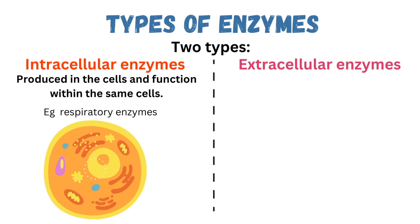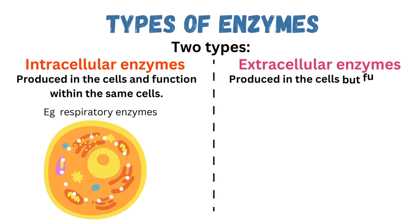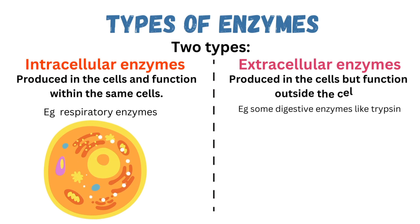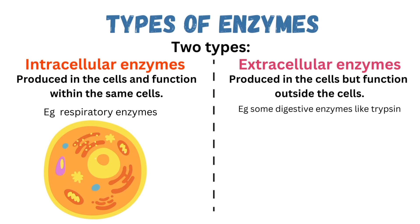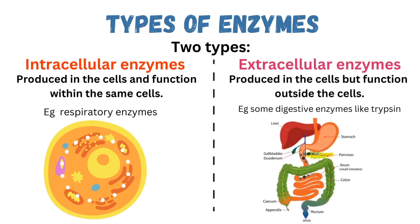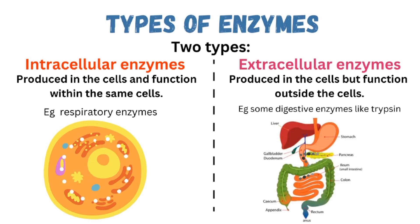Extracellular enzymes, on the other hand, are produced in the cells but function outside the cells that produce them. An example is trypsin, a digestive enzyme produced in the pancreas but transported to the small intestine where it functions. This is an example of an extracellular enzyme.